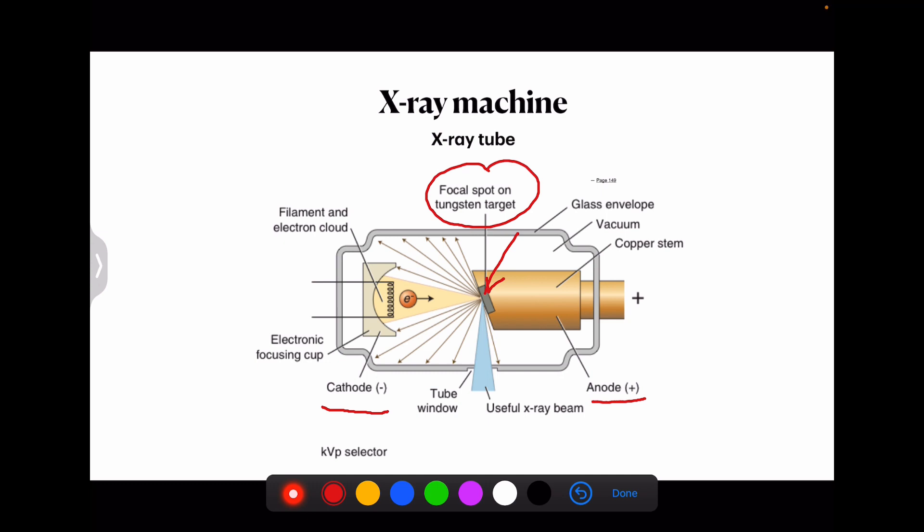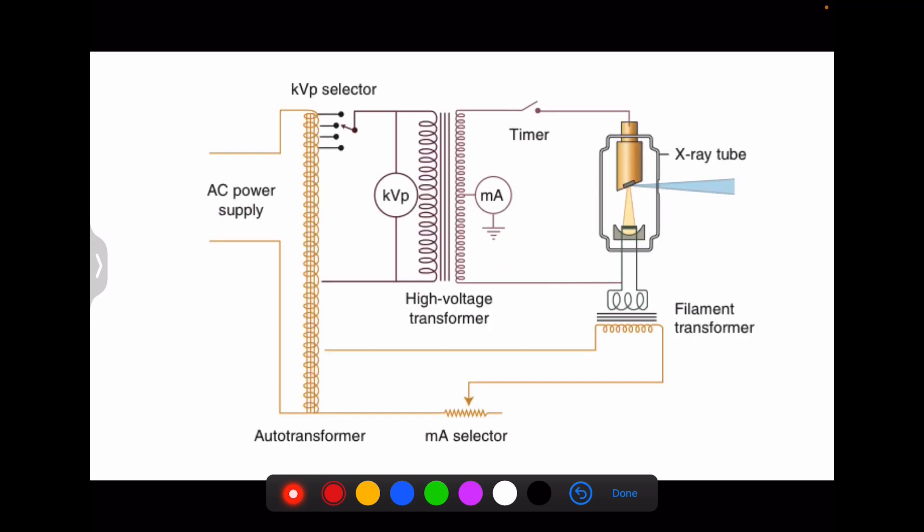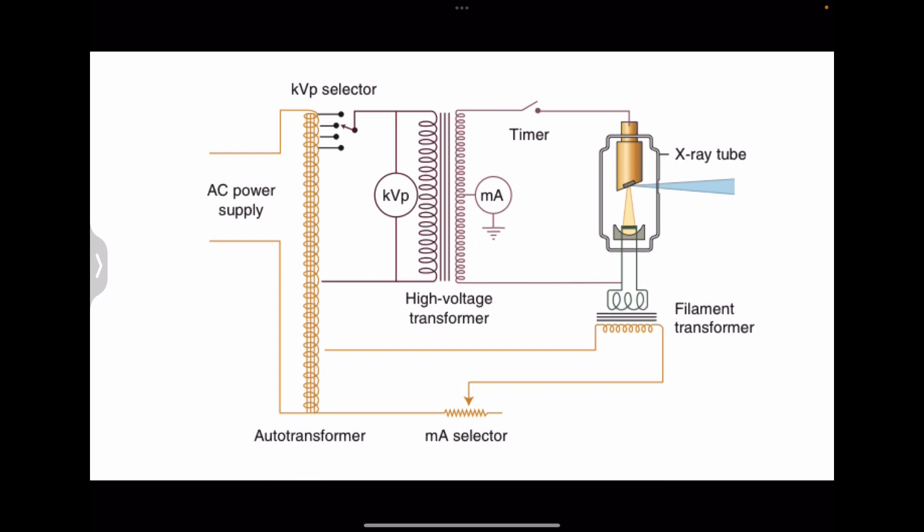There is also a copper stem which you can see here. This dissipates and reduces the risk of target melting. Then there is also a power supply which is better explained here. Basically this heats the x-ray filament and provides low voltage current by use of a step-down transformer that reduces the voltage of the incoming current. Controlled by the milliampere switch which regulates the temperature of the filament and the number of electrons transmitted.